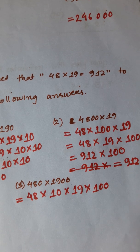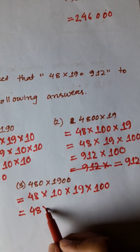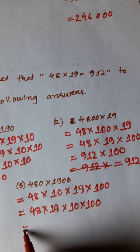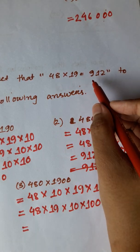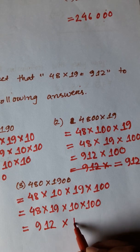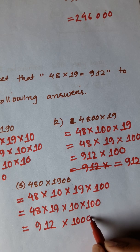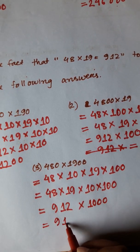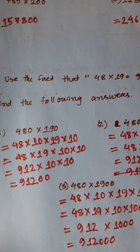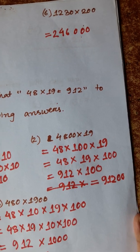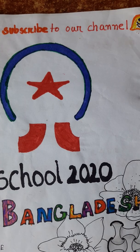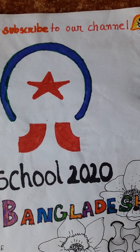Now 48 into 19 into 10 into 100. Now 48 into 19 is equal to 912. So 912 into 10 into 100. Now 48 into 19 into 100, so answer should be 91200. So here 912 into 100. Now 48 into 90 is equal to 912 into 40. So the answer is 912 into 30. Don't forget to subscribe our channel.